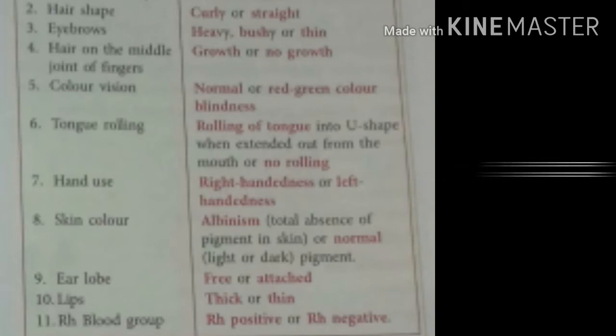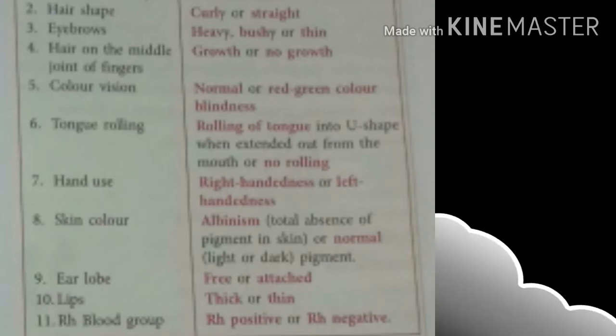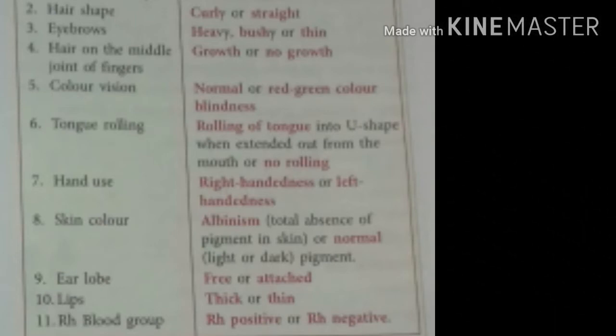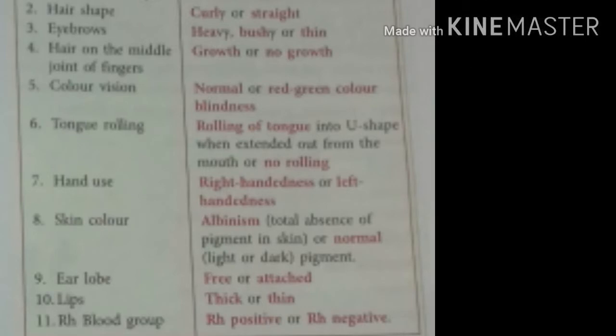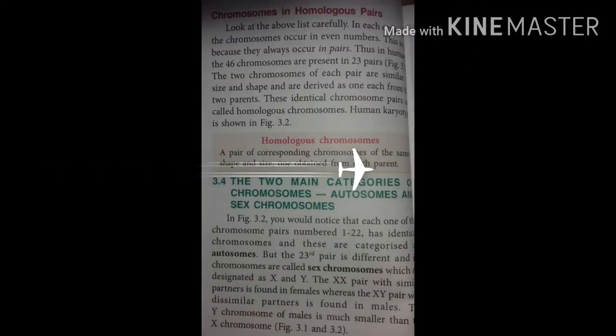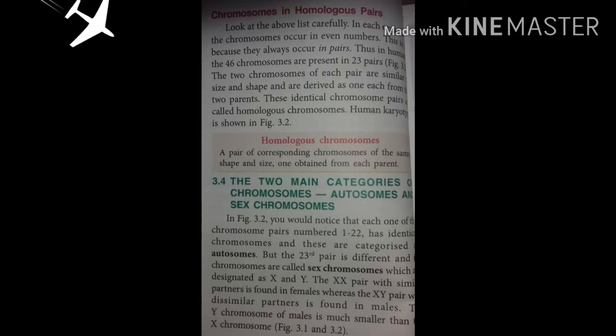Ear lobe shape: free earlobe or attached earlobe. Lip shape: thick or thin lips. Blood group: a person can have RH positive or RH negative blood group.